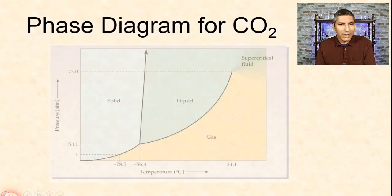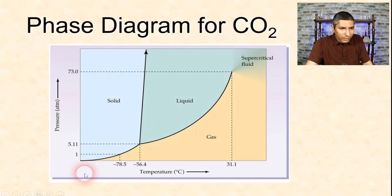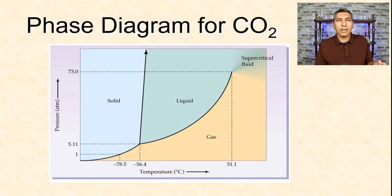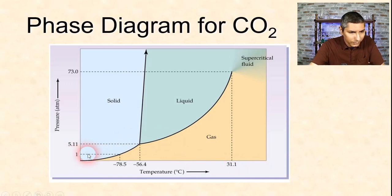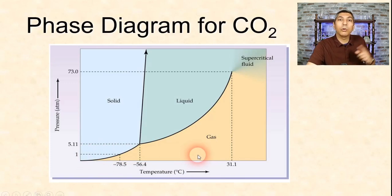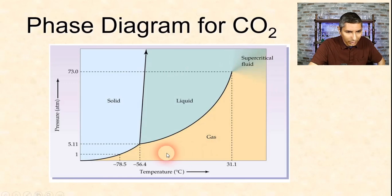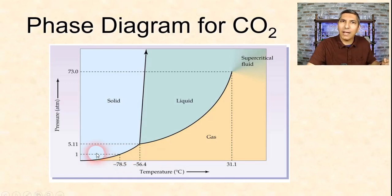Now let's look at a substance we may not be as familiar with — carbon dioxide. At one atmosphere pressure and 20°C room temperature, we can see from the phase diagram that carbon dioxide exists as a gas, which makes sense. If we cool it down — moving to the left on the diagram — at one atmosphere it transitions directly from gas into solid. Gas to solid is called deposition, so cooling carbon dioxide gas would produce deposition.